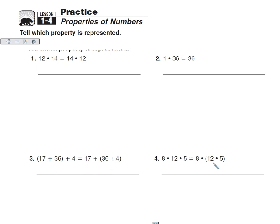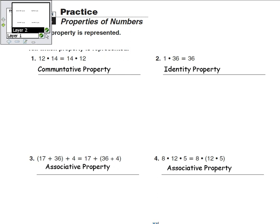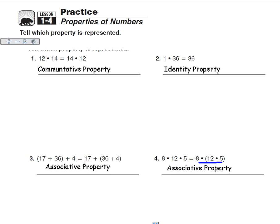And here's the associative again, where we simply grouped the numbers together. And here we have the commutative property, order, identity property, multiplying by 1. And associative, we're grouping the 17 plus 36. And here we group 36 plus 4. So let's move on.